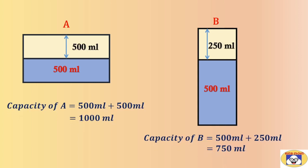Thus we can say the capacity of A is equal to 500 ml plus 500 ml equals 1000 ml, while capacity of B is equal to 500 ml plus 250 ml equals 750 ml.